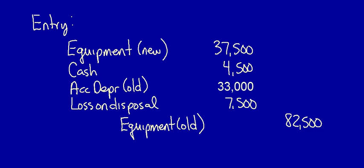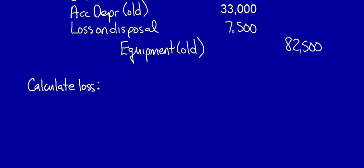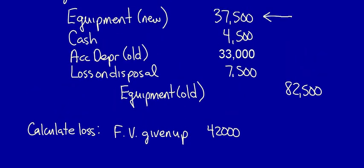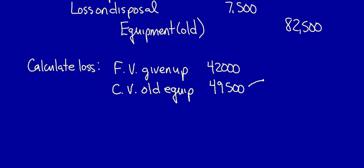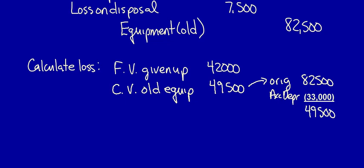Again, we can calculate this as a plug, but we can also do the calculation mathematically. In order to calculate the loss, I need to take the fair value given up. Why am I writing down $42,000 when we know that the fair value recorded in this entry is $37,500? That's because the fair value of what I gave up is equal to the fair value of the equipment as I recorded it, $37,500, plus the cash I received — that equals $42,000. Now I compare it to the carrying value of the old equipment: the original cost less the accumulated depreciation equals a carrying value of $49,500. Compare the two and it calculates the loss on disposal of $7,500.